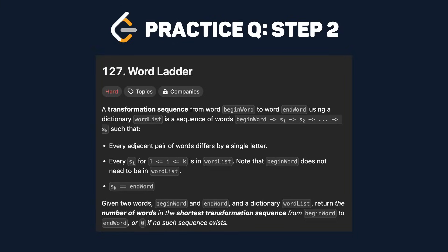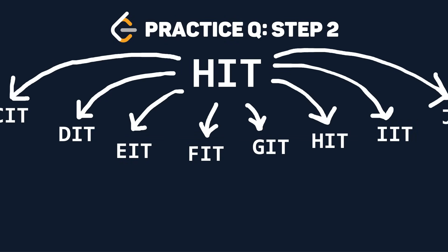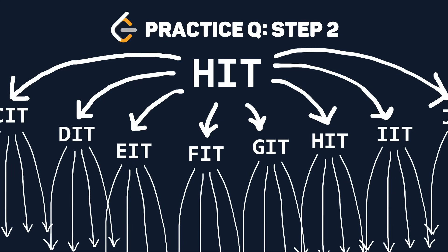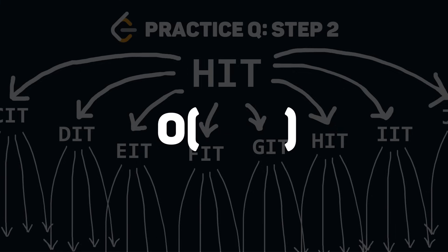Let's apply this to our LeetCode problem, starting with the straightforward solution and then finding the optimal. Starting from begin word, generate all possible single letter transformations and recursively continue this for each new word until we reach our end word. This is clearly not efficient. Each word can be transformed 25 different ways for each letter of the alphabet except itself, meaning each word has 25 times L transformations. We also know we have to do this for each word in the word list, represented as N. Therefore, our time and space complexities for the straightforward approach are O(25L^N).